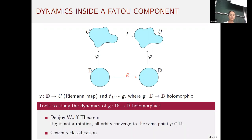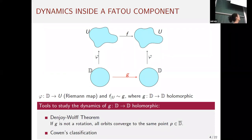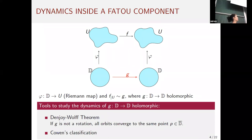To study holomorphic self-maps of the unit disc we have powerful tools, for instance the Denjoy-Wolff theorem, which says that whenever we have a holomorphic self-map of the unit disc which is not a rotation, then all orbits converge to the same point, which can be inside the unit disc or on the boundary. This is precisely what happens in our Fatou components: for attracting basins the point is inside, and for parabolic basins and Baker domains it is on the boundary.